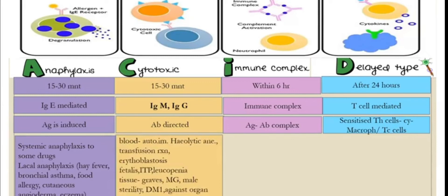For Type 2 cytotoxic reactions — the name tells us it is toxic to cells. It may affect blood cells or tissues. Blood-related examples include autoimmune hemolytic anemia, hemolytic transfusion reactions, erythroblastosis fetalis, idiopathic thrombocytopenic purpura where platelets are affected, and leukopenia due to cytotoxic destruction.